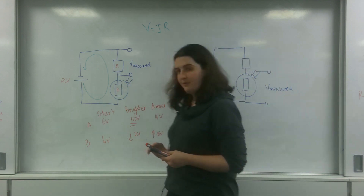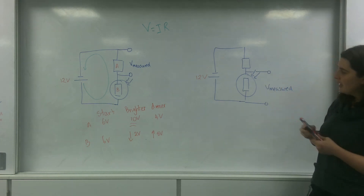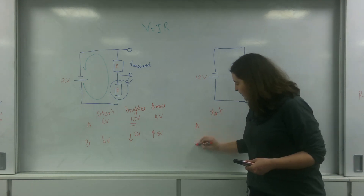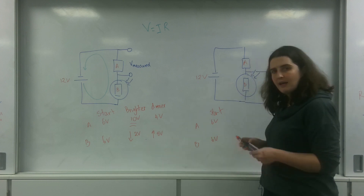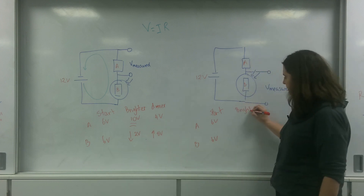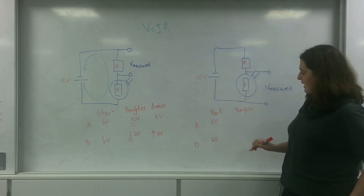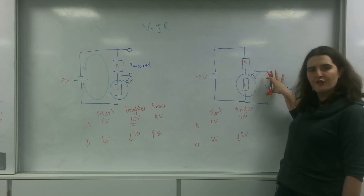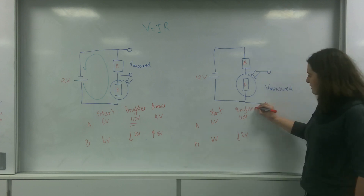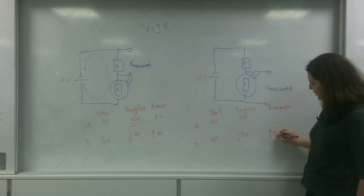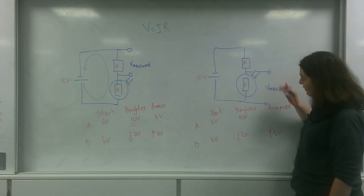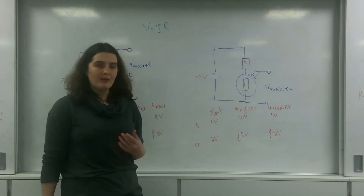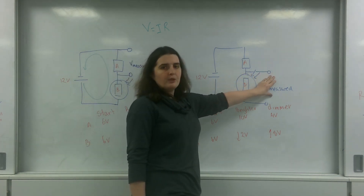Now this is a circuit set up a little differently — my measured part is here, across the LDR. We'll call the starting positions A and B at six volts each. When it gets brighter, the LDR voltage goes down to two volts and the other goes up to ten volts, so my measured voltage decreases. Going dimmer, this measured voltage would go up to eight volts, and the other would go down to four volts.